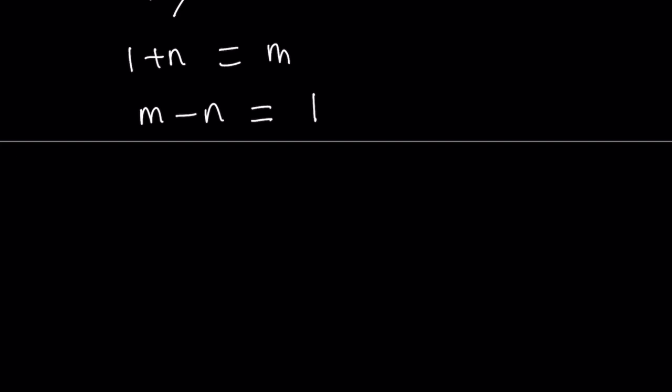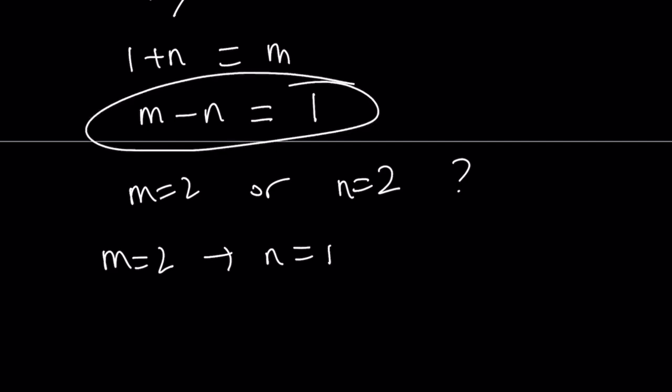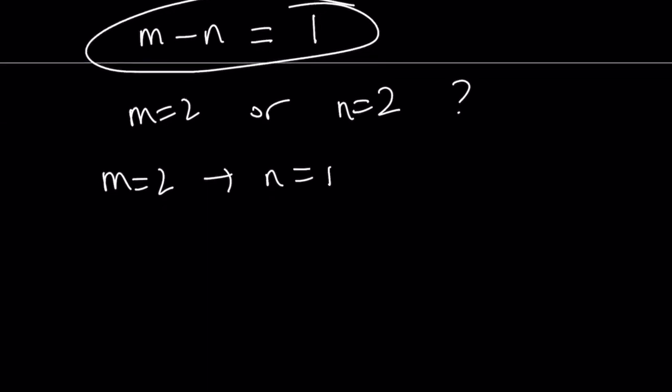So either m equals 2 or n equals 2. Which one? Let's find out. If m is equal to 2, then n must be 1 because their difference is 1. Remember, m minus n is equal to 1. But that's impossible because n equals 1 is not a prime number.